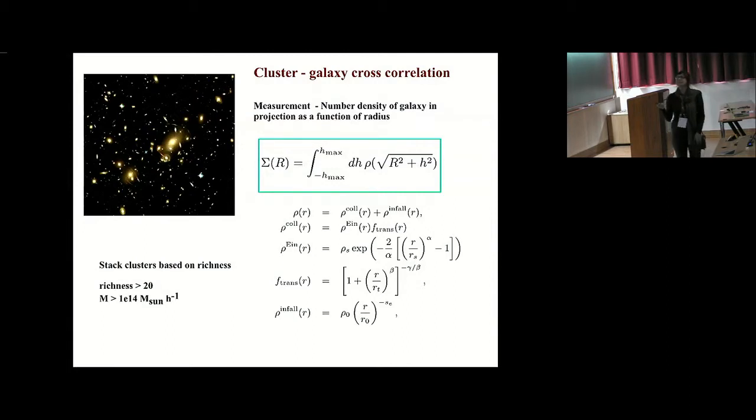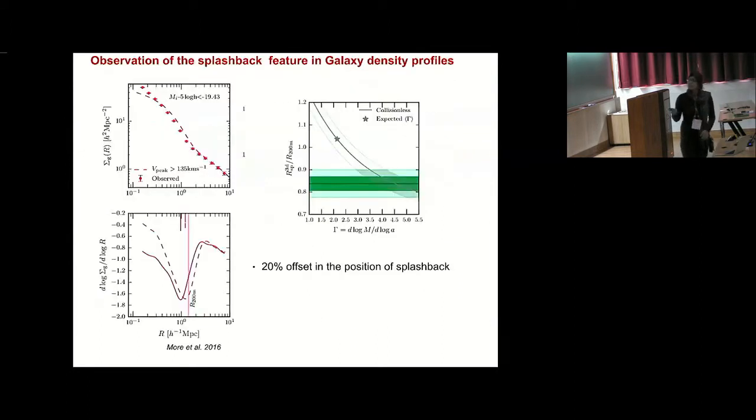We basically locate the clusters and use the cluster centers from optical cluster catalogs. Then we measure the number density of galaxies, which are known to live in subhalos, as a function of radius. We model the projected number density of galaxies from the 3D densities. We have an inner Einasto-like term, and we have a term which basically mimics the transition region. Then we try to constrain the splashback radius. Here is a plot of the measured splashback from number density of halos from SDSS, from Surhoud's paper. The main upshot was that we found that the location of the splashback radius was about 20 percent smaller than what we expected from simulations.